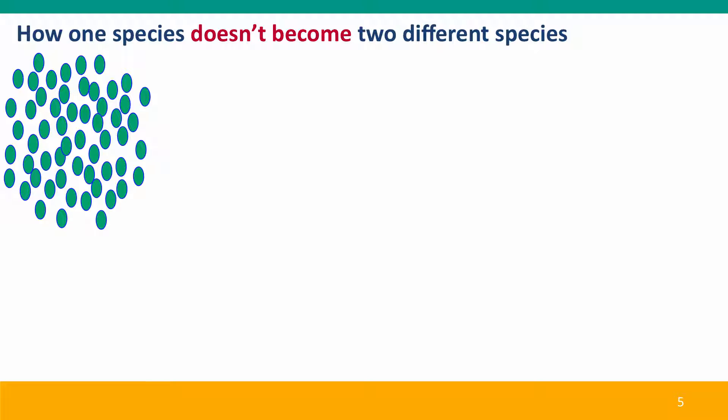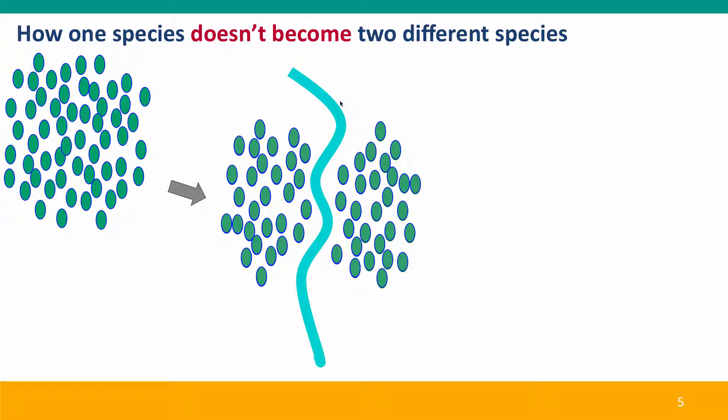But that's what can happen sometimes. Sometimes a species will give rise to two species. But other times speciation may not occur. So again, we've got our original population, we've got our geographic barrier, but maybe this barrier is not a very strong barrier to gene flow between the two populations. Maybe they're birds and they fly across the river with no problem, or insects, or wind pollinated plants.